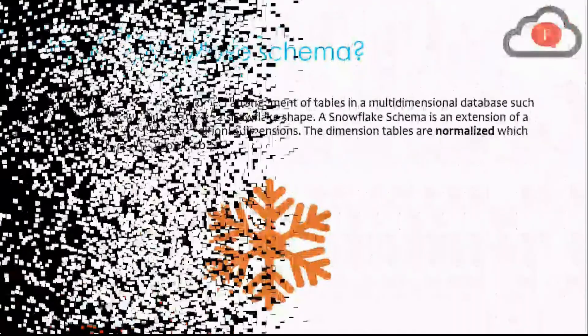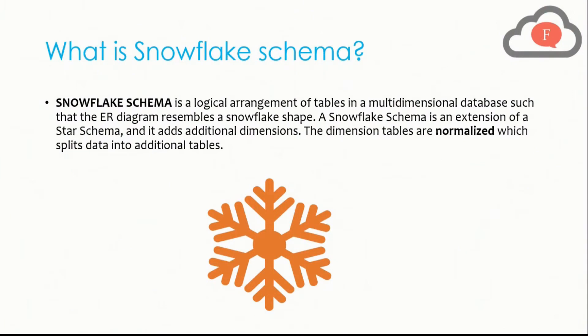The snowflake schema is a logical arrangement of tables in a multidimensional database such that the ER diagram resembles a snowflake shape. A snowflake schema is an extension of the star schema and adds additional dimensions. The dimensions are normalized which splits data into additional tables. That means it's just an extension of the star schema.